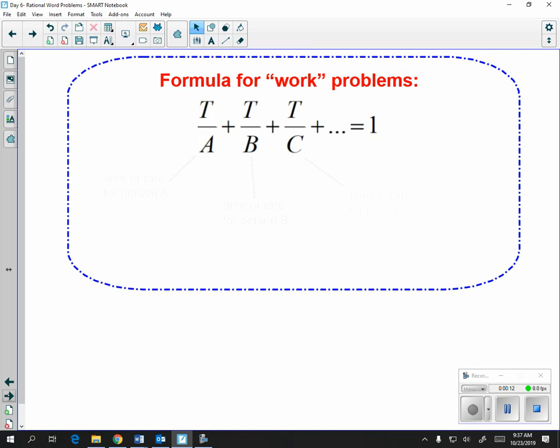So we do have a special formula for that that you have to remember, it's not given to you. Up top we have T, which represents the time or rate together. So if two people were working on something and they took two hours to do it together, that would go in the numerator.